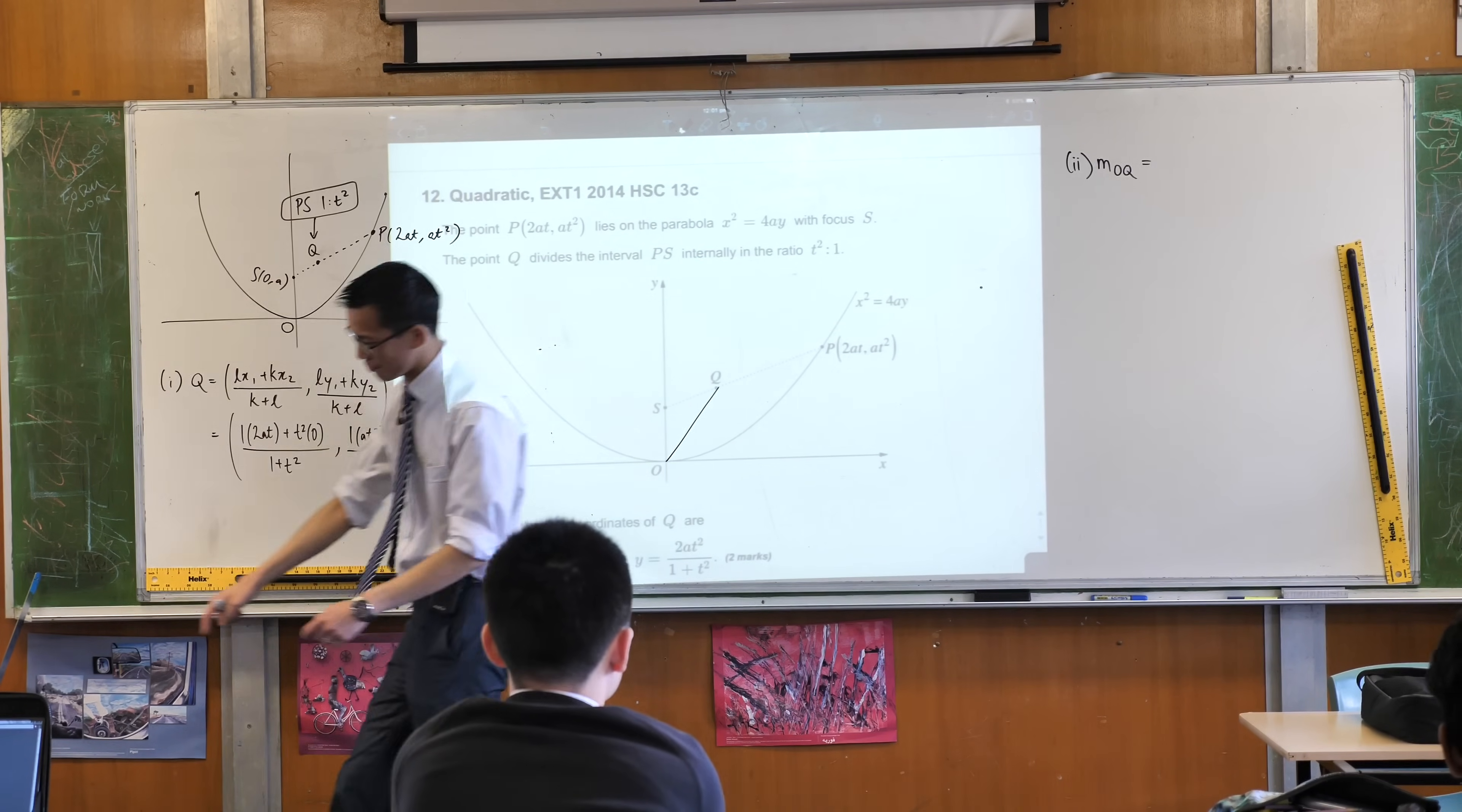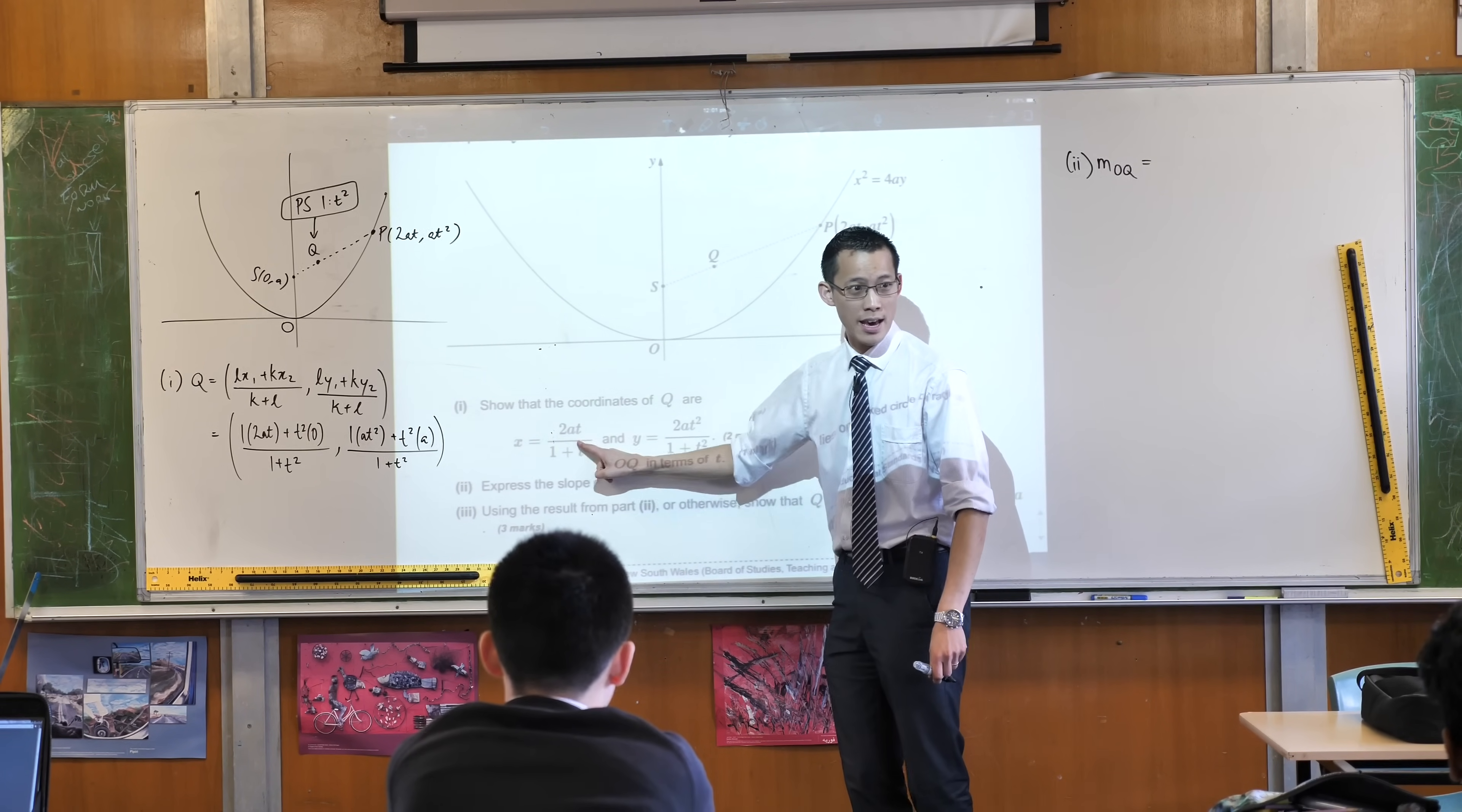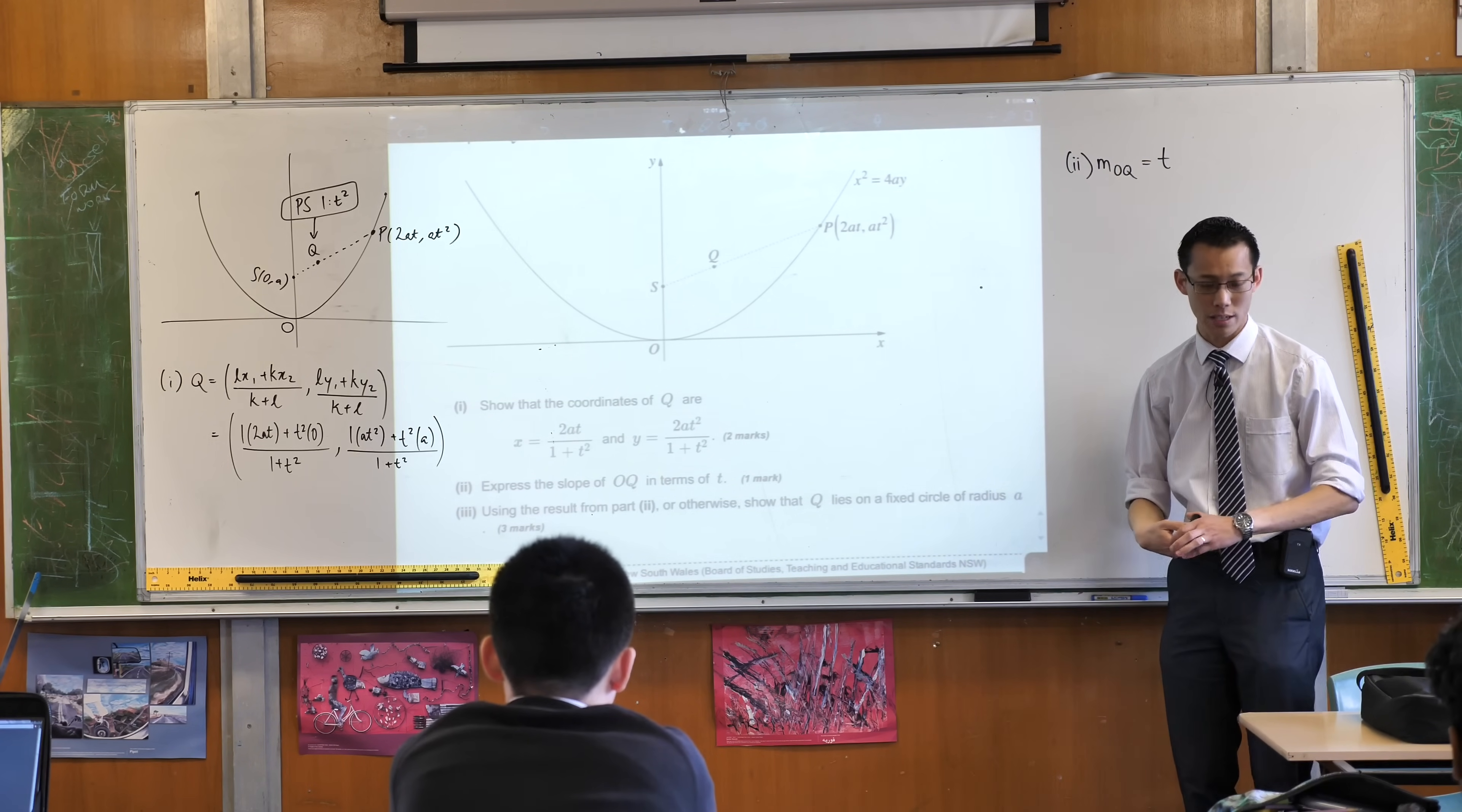But since we're comparing to the origin, this is rise and this is run. Do you see that? So you can write 2at squared over 1 plus t squared divided by 2at over 1 plus t squared and you can see you simply end up with t. Everything else cancels.